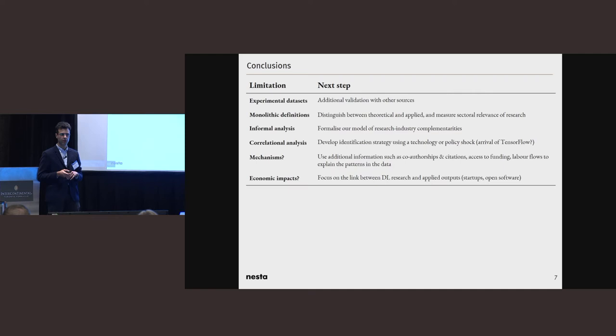To conclude, we acknowledge lots of limitations in everything we have done. These are experimental data sets that need to be triangulated. We are defining deep learning in a very monolithic way. We would like to actually be able to distinguish between papers which are experimental, papers which are theoretical, actually analyzing the abstracts. The model is very informal. We would like to formalize this. The analysis is correlational. We need to develop an identification strategy. And actually, Daniel already gave us an idea on how to do this, perhaps using TensorFlow as a shock, a technology shock. We need to get a handle on the mechanisms underpinning the patterns we are looking at. For example, we could use additional information such as co-authorships and citations for access to finding or even labor flows to be able to see what is it about collocation of research and industry that favors AI research.